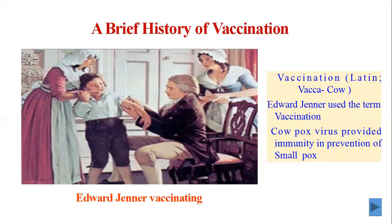Impressed with this method of variolation, she ordered the embassy surgeon Charles Maitland to inoculate her five-year-old son after her return to London in 1721. Lady Montagu introduced the method to the physician of the royal court. Thereafter, variolation became quickly popular among physicians in Europe. However, variolation was not without risk — on average, 2 to 3% of variolated persons died from the disease.